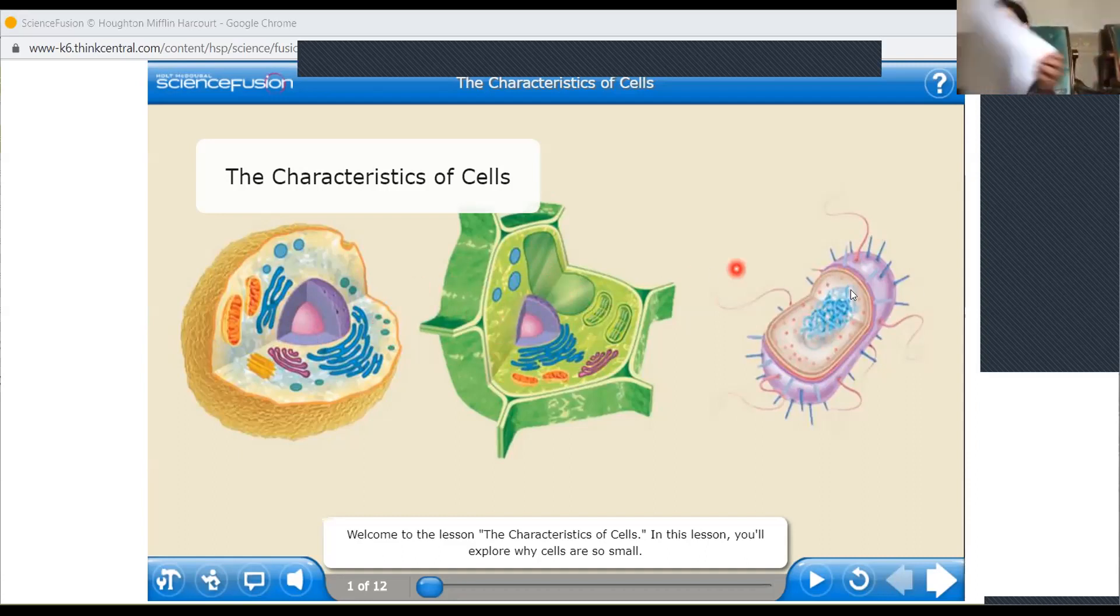So which one? This one is single cell, whereas these two, which is plant and animal, these are called as eukaryotes.